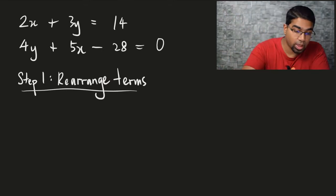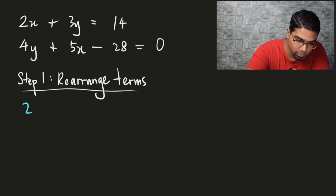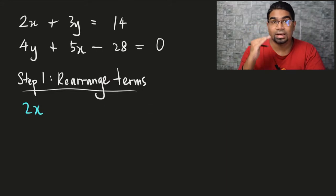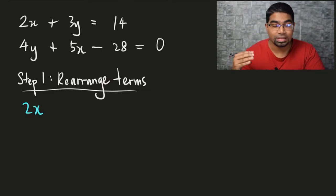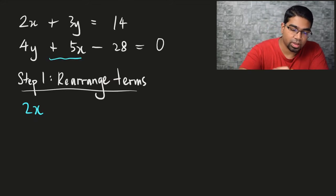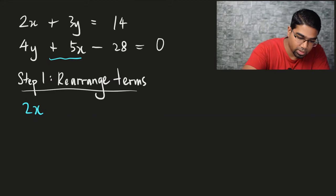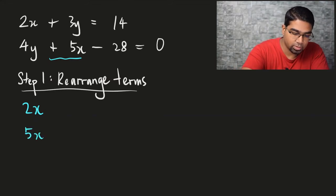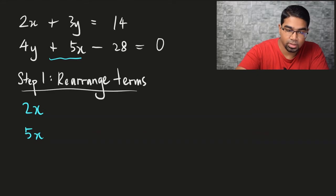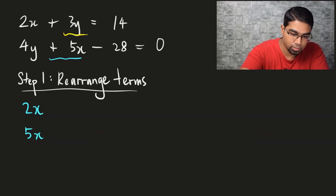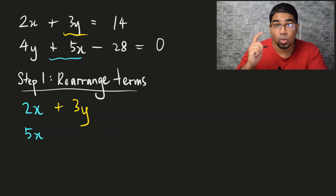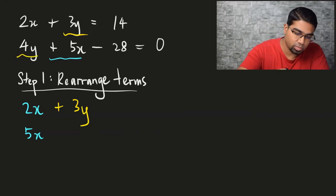Let's look at the first one: 2x. So let's write 2x. The x term for the second equation is positive 5x, so this is what we want to arrange — we want to align it, so we will write 5x at the bottom. And then let's get to the next term: the y term, which is 3y here, so positive 3y. And look for the y term in the next equation, which is positive 4y, so plus 4y.